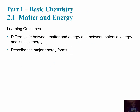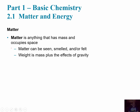Looking at section one, which is titled Matter and Energy, our learning outcomes are: first, for the student to be able to differentiate between matter and energy, and between potential energy and kinetic energy, and to describe the major forms of energy.